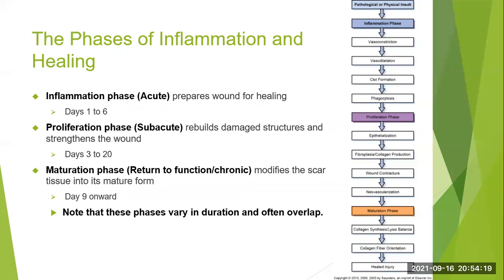On page 26 in the book there's a chart — basically a flow chart for the phases of inflammation and healing. The blue, purple, and peach colored headings are the inflammation phase, proliferation phase, and maturation phase. The phases can vary in time and overlap. I like this chart because it shows the different features of each phase. In the acute or inflammation phase, the body is preparing the wound for healing.